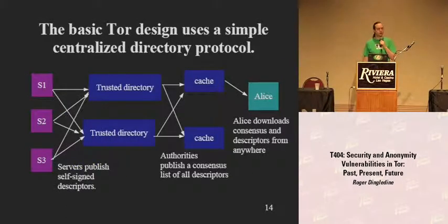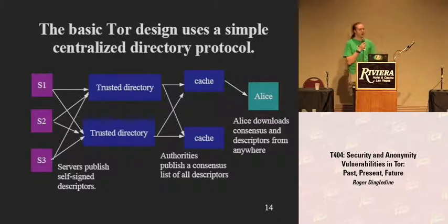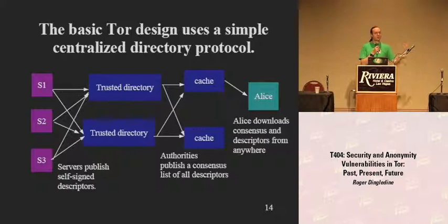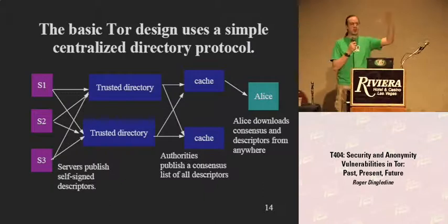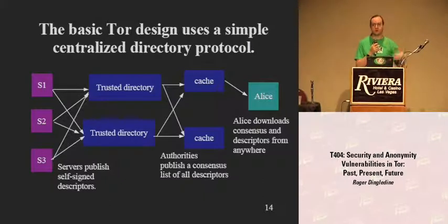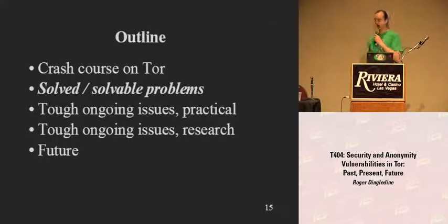We also have a directory system that lets all users know about all the different servers. Each server has its own public-private key pair, builds a server descriptor with its address and exit policies, signs it, and sends it to the directory authorities — right now there are six of them. They compute a consensus listing all servers in the network, and if you want to use Tor, you get that list first and then build your path.